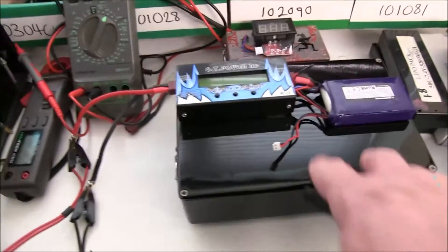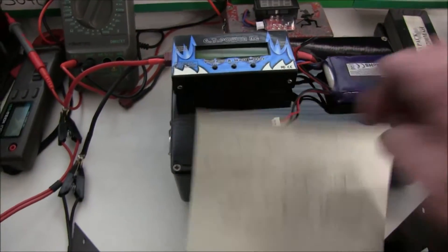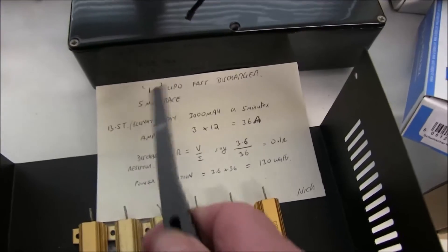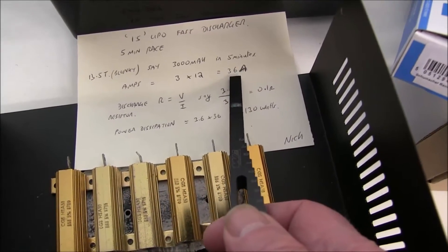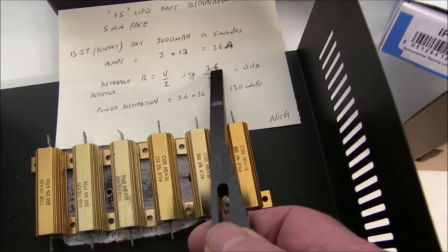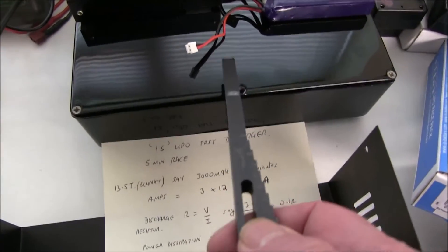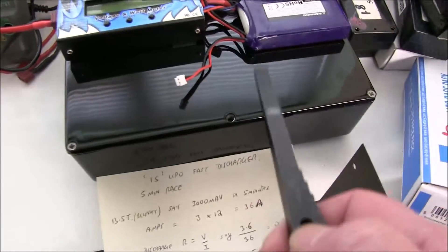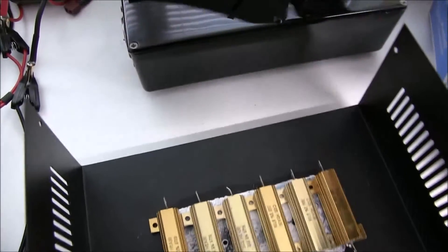So that's pretty simple discharger, but now for 1S, how much resistance do you need? So I've got a little 1S chart here. Again, a 5 minute race say using 3000mA in 5 minutes, again as I said 36A, but you've only got half the voltage 3.6 volts, so 3.65 by 36 - 0.1 of an ohm. You need two of these in parallel or one that has got half the resistance. Instead of 0.2 of an ohm, you need 0.1 of an ohm.